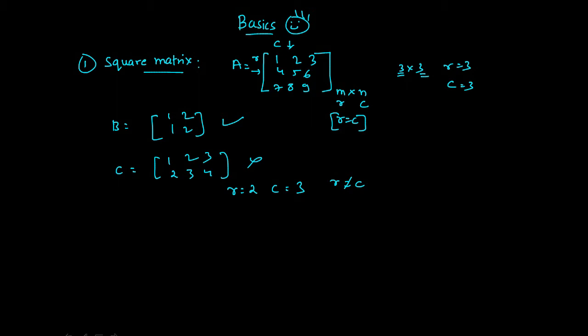Now why am I giving you the basics of the square matrix? The answer is it is used in eigenvalues and eigenvectors. The eigenvalues and eigenvectors chapter is all about the square matrix — what will happen, what kind of variations we have, it is dealing with that. So once you know the square matrix concept, the rest will be a cakewalk for you.